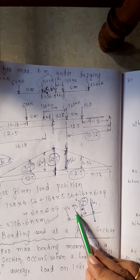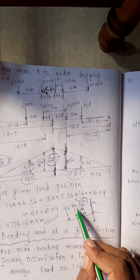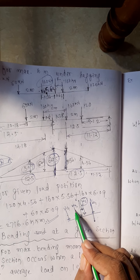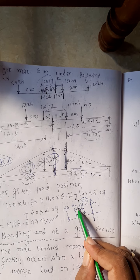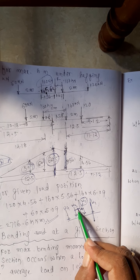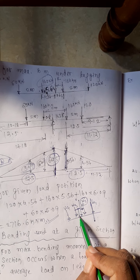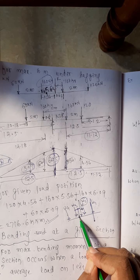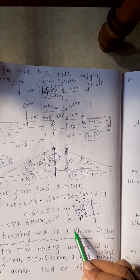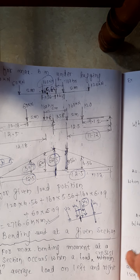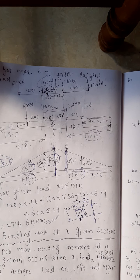Like that, if you want the maximum bending moment under load 3, what you do? You see what is the distance between load 3 and the resultant, and you calculate the midpoint of it. Say this distance is x, x divided by 2. So whatever center point you are getting, that should be kept above the center of the beam to get the maximum bending moment under the load. This is one category of problem.